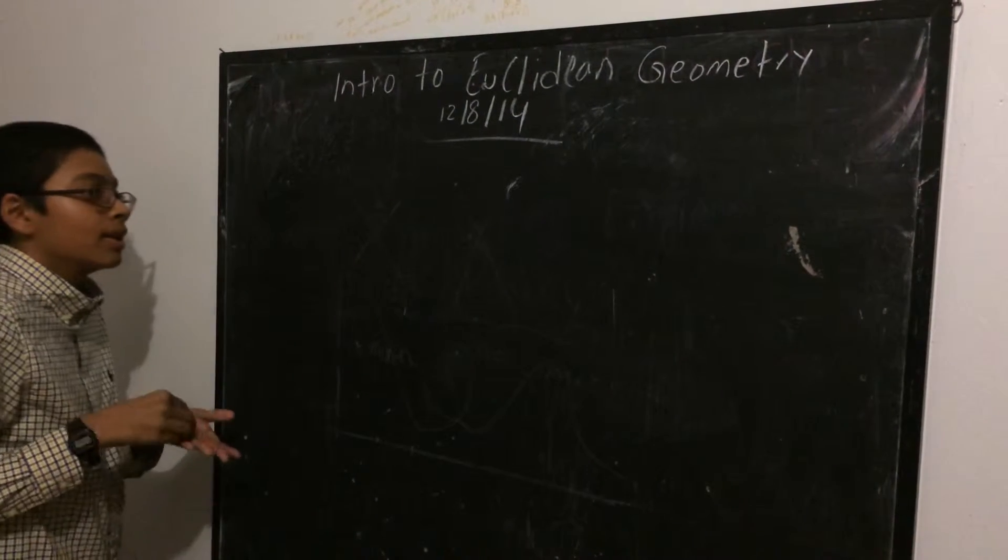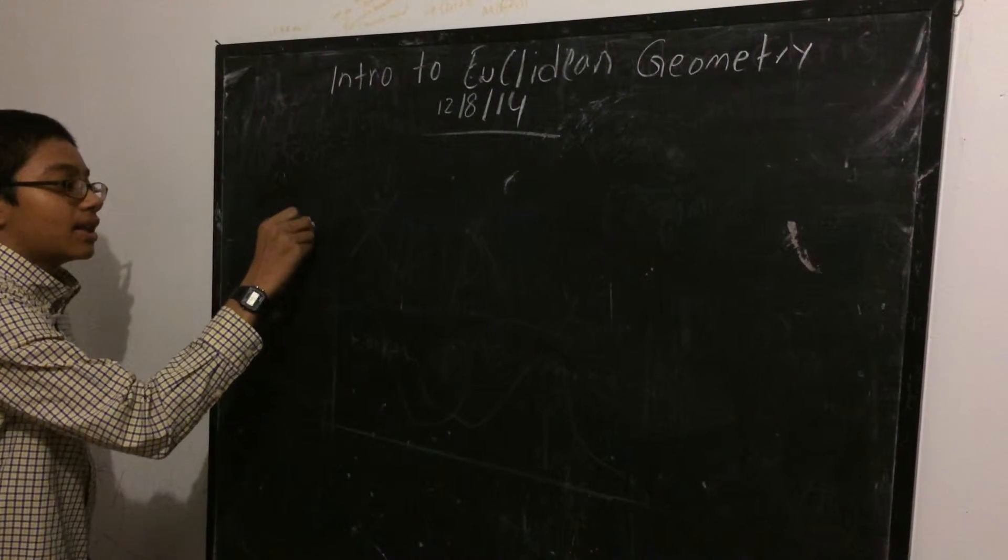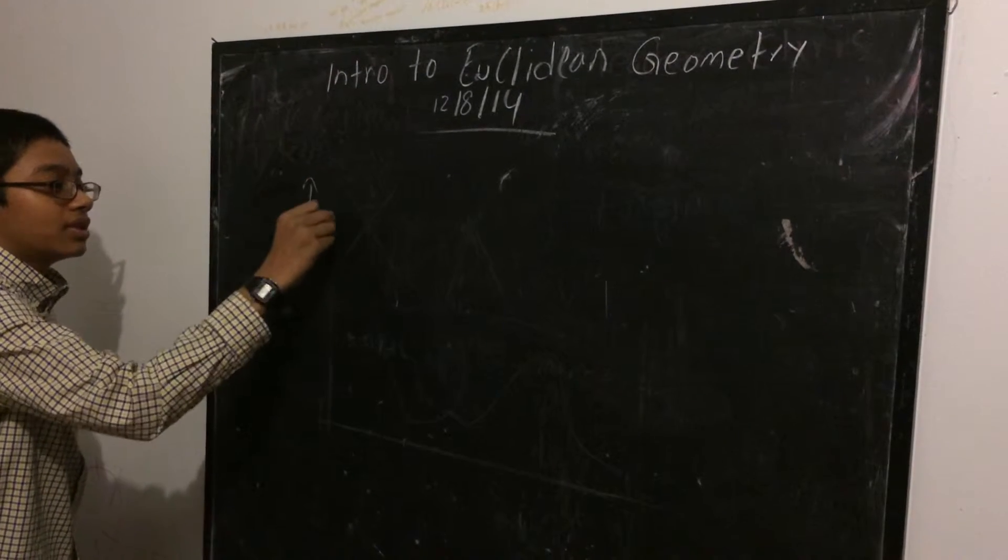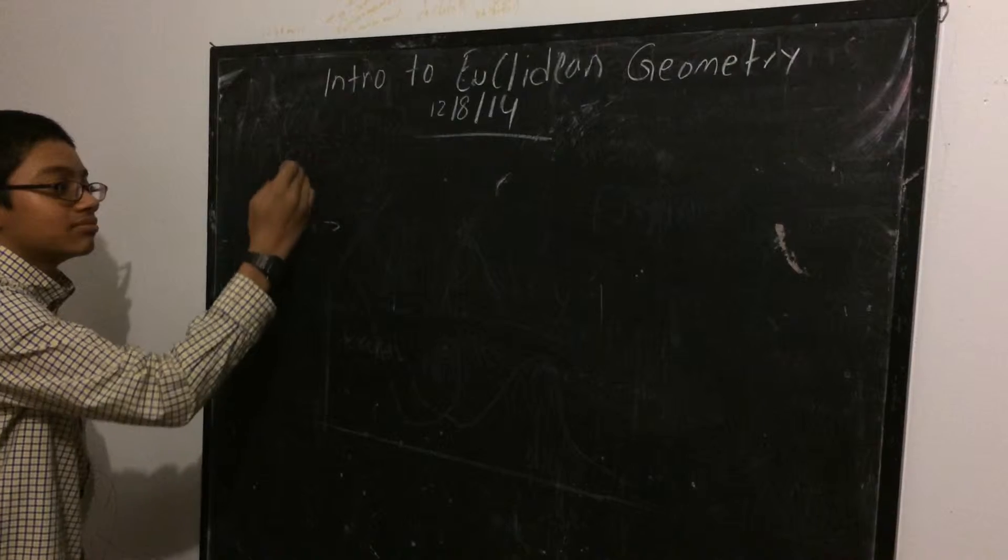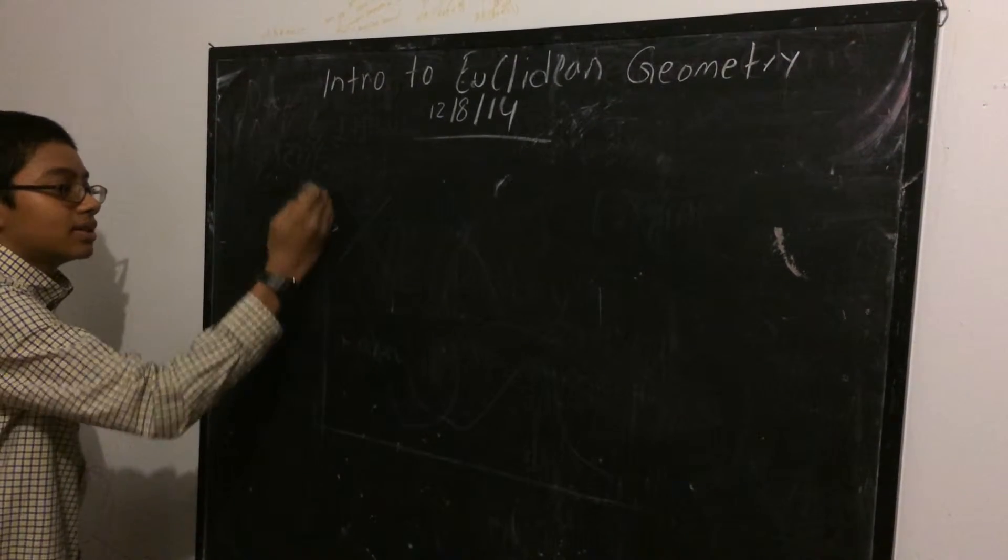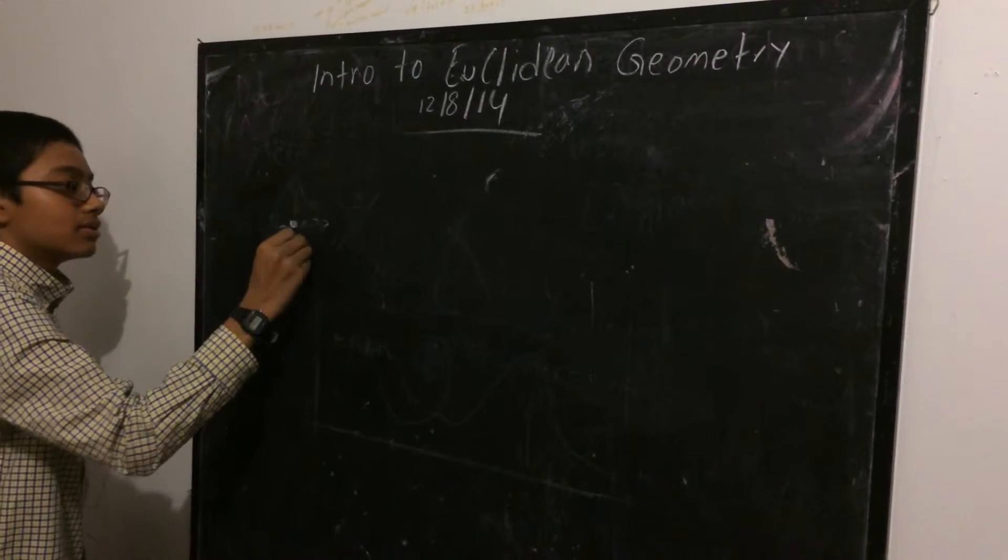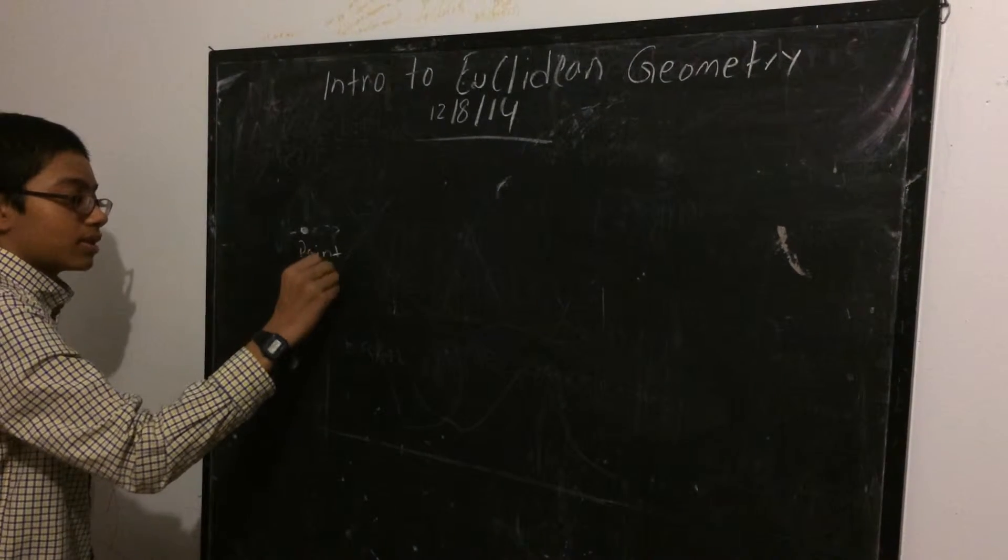So, we're going to start with the most simplest structure in geometry, the point. And the point is zero dimensional. It can't move anywhere, left, right, or up and down. So it has no width. So that's a point.